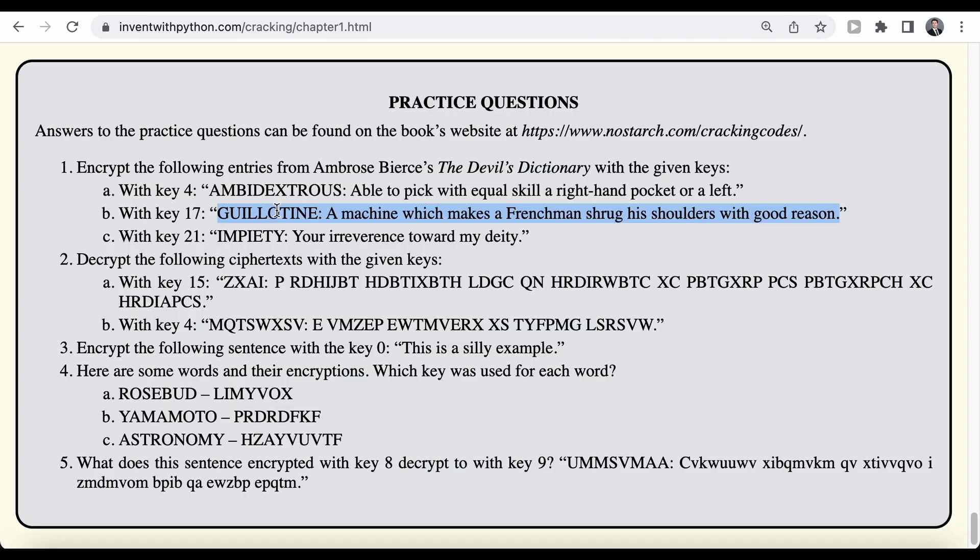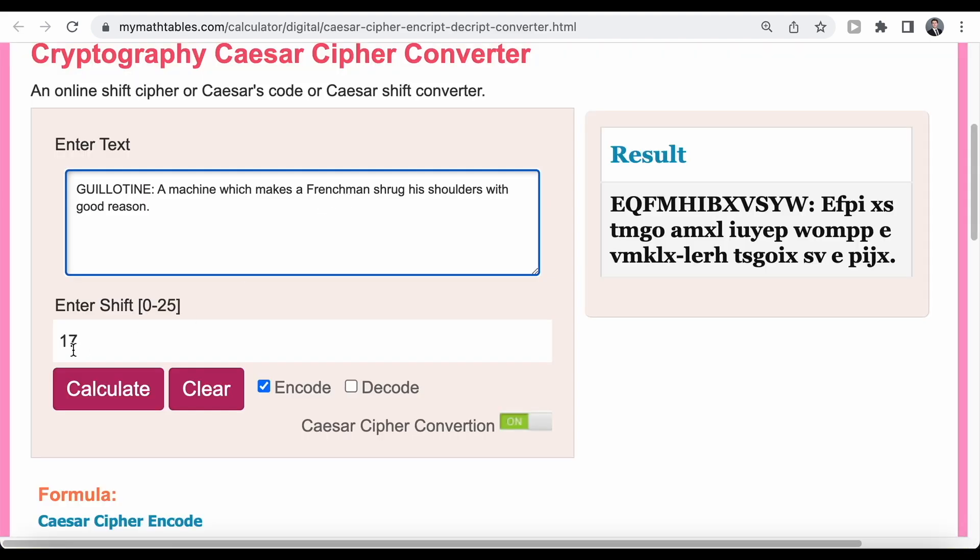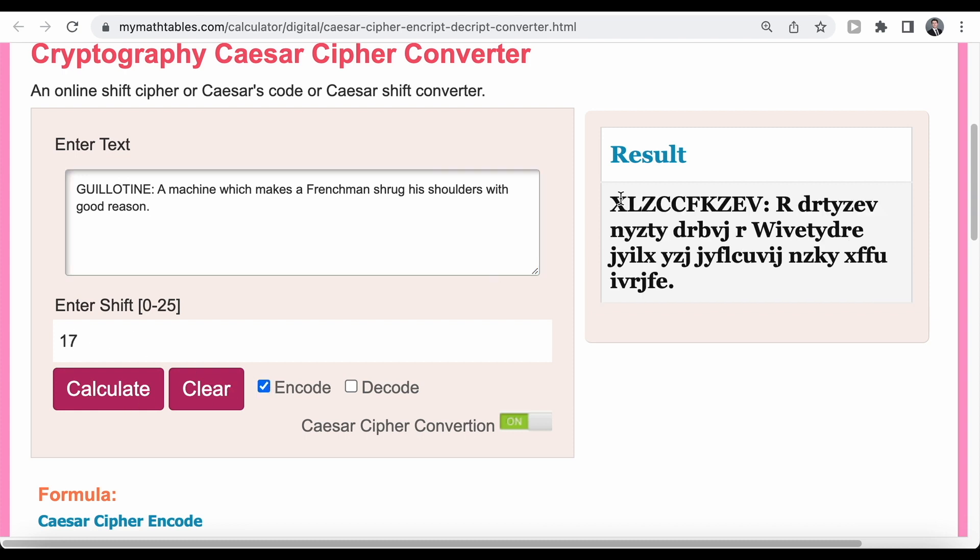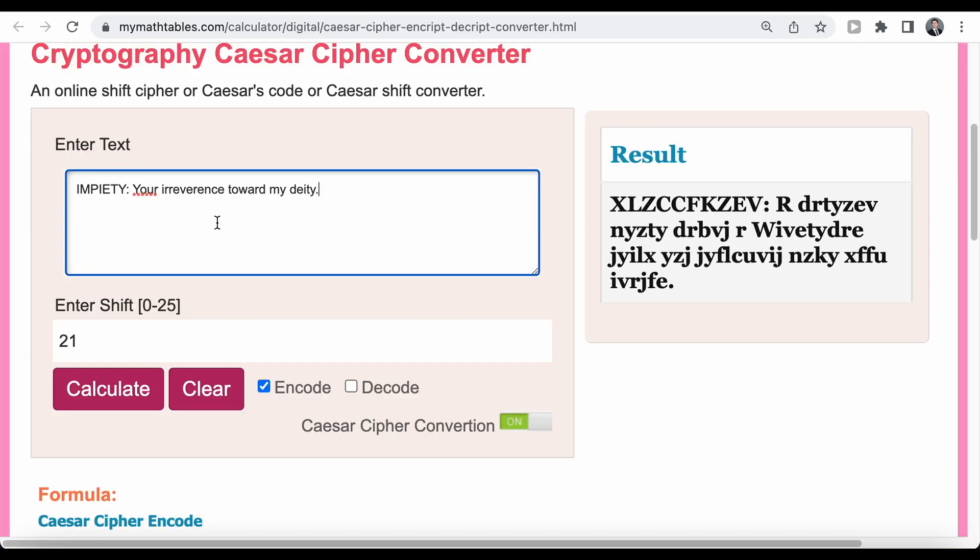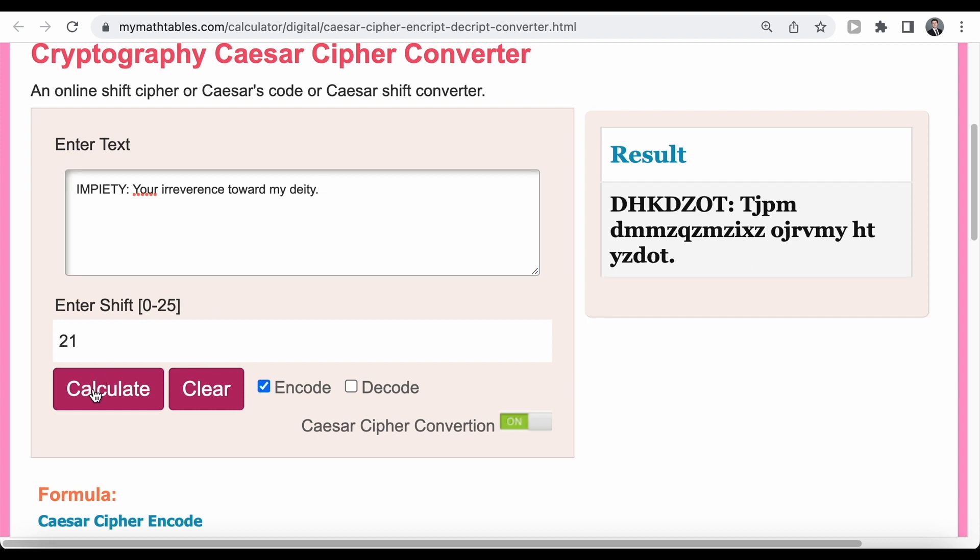Of course, we can do the same with the second sentence. In this case, we should apply a key of 17. So if we copy that, paste it in here and apply a key of 17 and encode the message, then we get this encrypted text back. And finally, we should encrypt this message here with key 21. So again, we're going to select our key 21 and encode and paste in our text. And as we click calculate, we are going to see the result here.